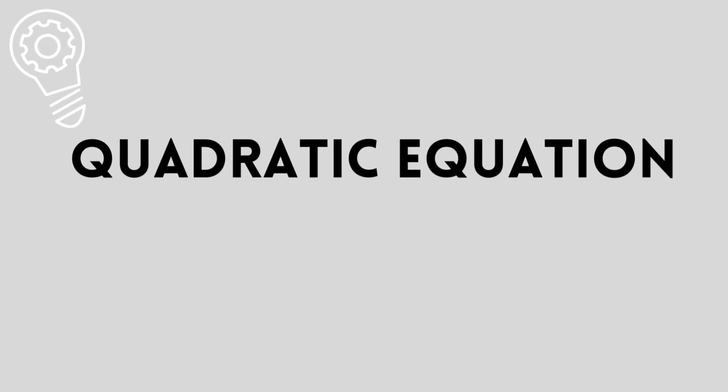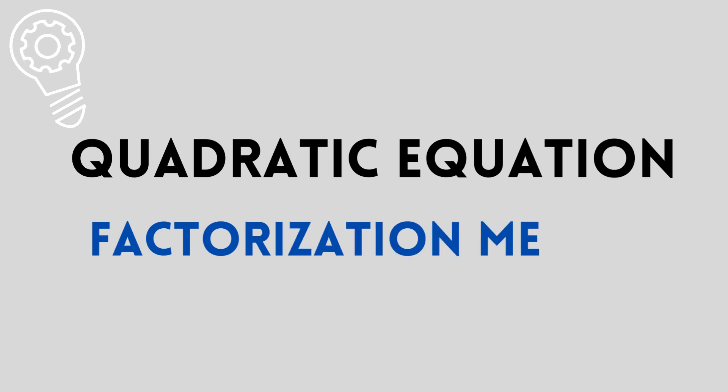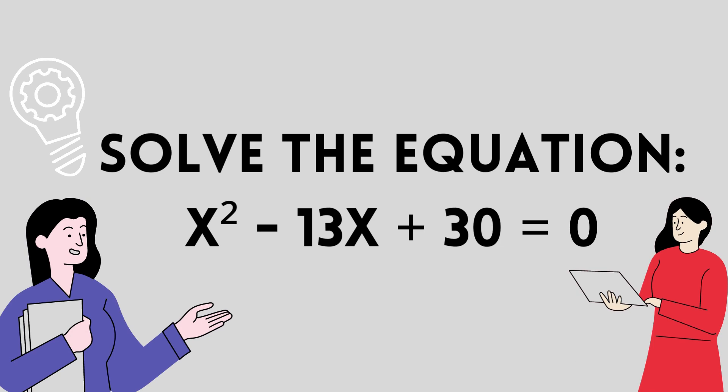In this video, we will be solving a quadratic equation by factorization method. The equation that we will be taking a look at is x² - 13x + 30 = 0.